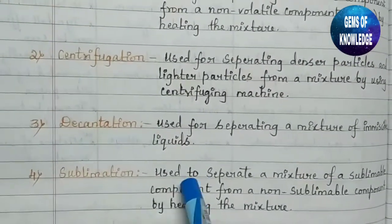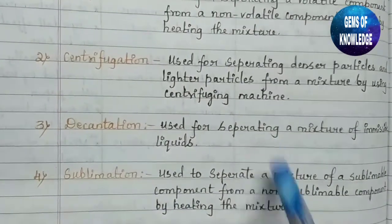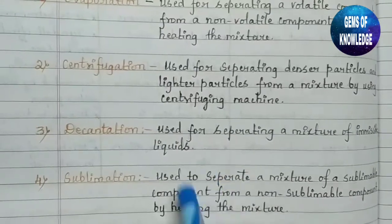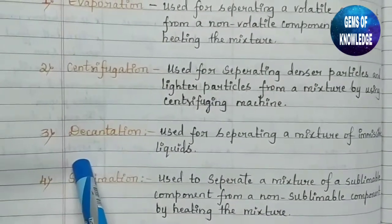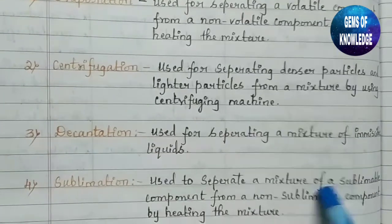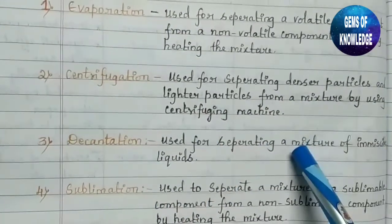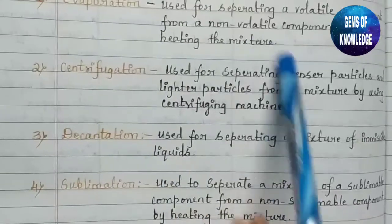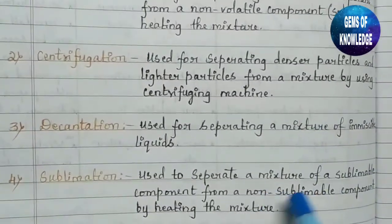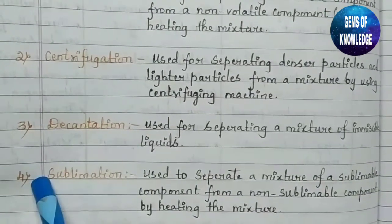Sublimation is used to separate a mixture of a sublimable component from a non-sublimable component by heating the mixture. Sublimation is the process where a solid is directly changed into the gaseous state without coming into the liquid state. If two mixtures are mixed where one is sublimable and the other is not, the sublimable component is separated using this technique.